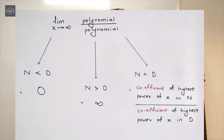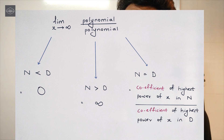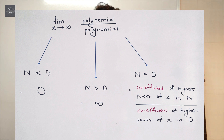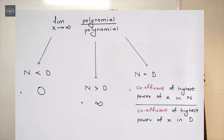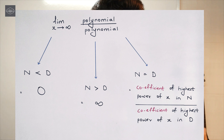And the last case is: if the degree of numerator is equal to the degree of denominator, then the answer of the function is the coefficient of the highest power of x in the numerator divided by the coefficient of the highest power of x in the denominator.